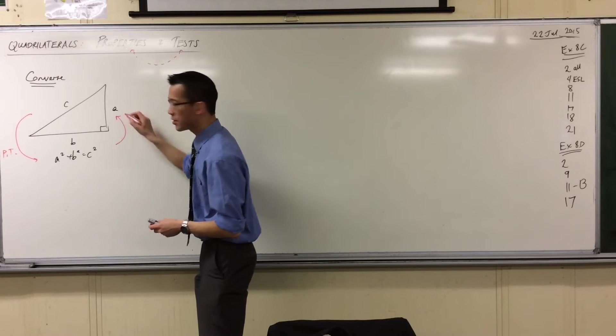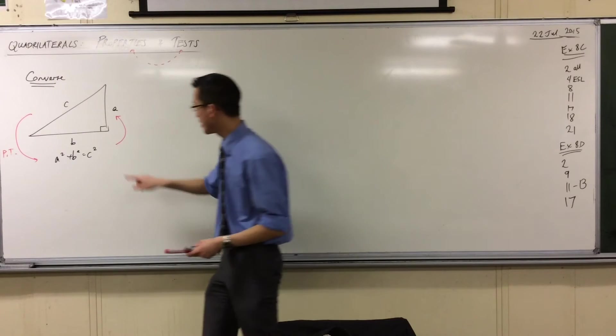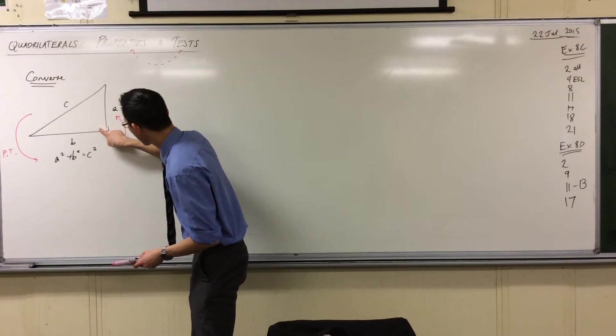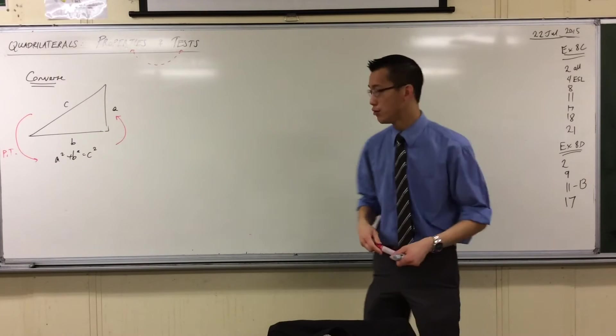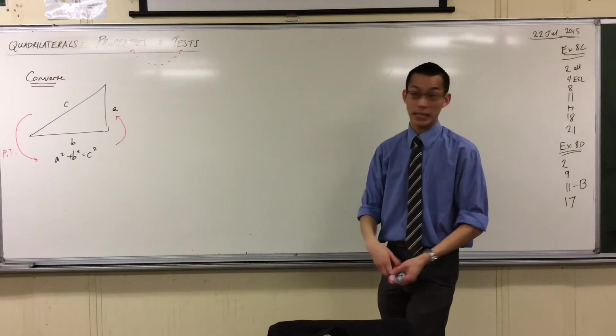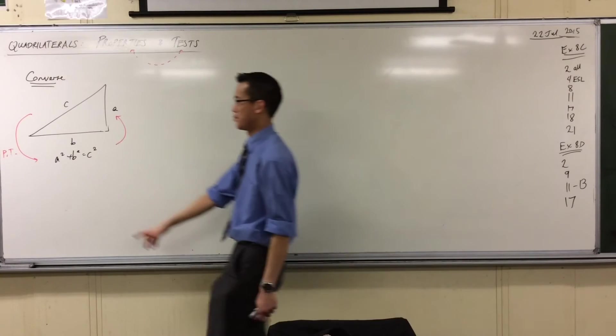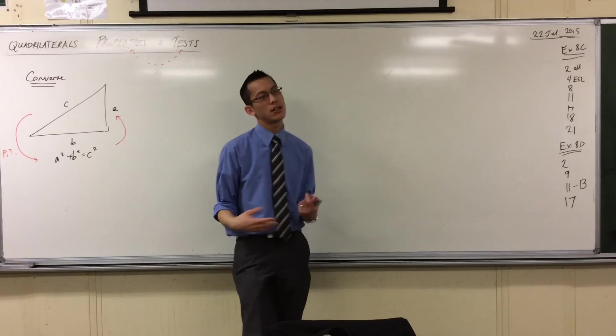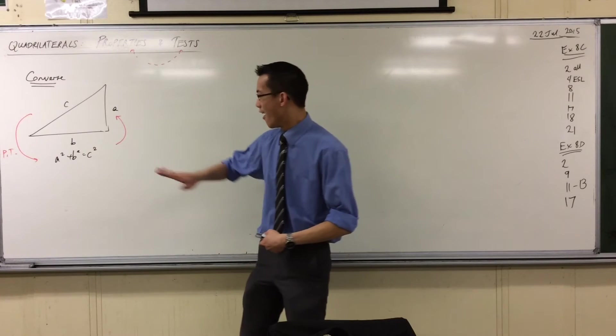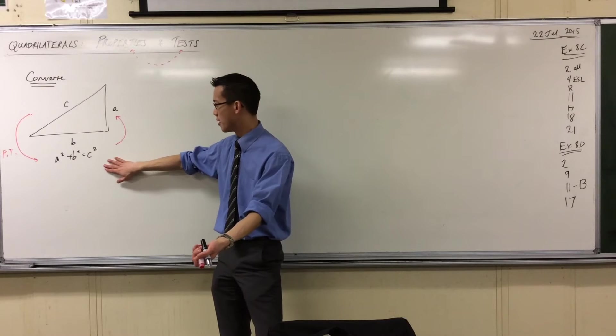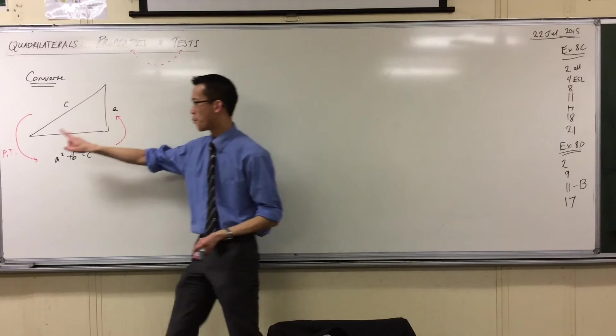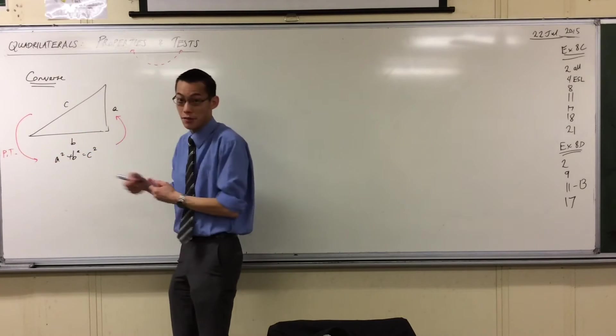It's to go in the opposite direction and to say if you have a triangle and you happen to know that its sides are related in this way—like you measure them out, and then you square these guys, you add them, you square this guy, and you end up with the same result—on the basis of saying this, you can therefore conclude what was the premise for Pythagoras' theorem, namely that there is, in fact, a right angle.